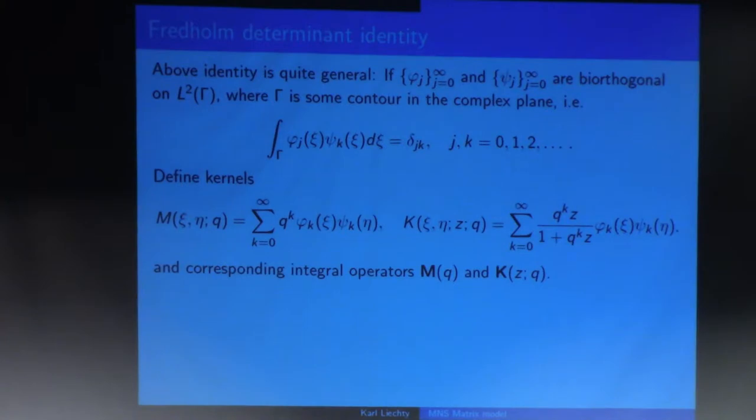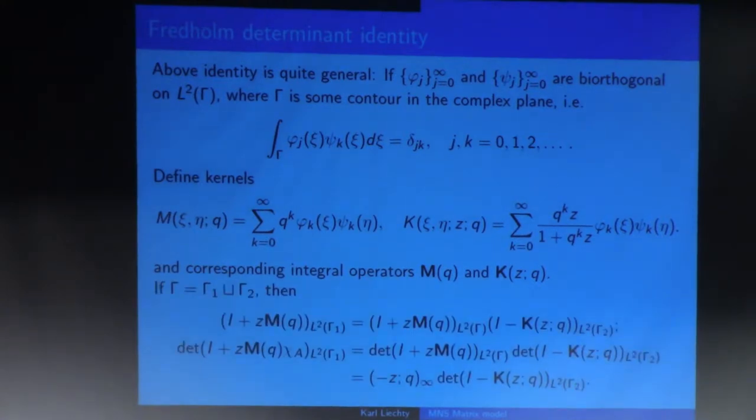And now, let me define kernels analogous to what we saw before. So M is just the sum of Phi times Psi weighted by Q, and K is the sum of Phi times Psi weighted by this rational expression involving Q and Z. And there's corresponding integral operators, bold M and bold K. Then we have exactly the same result as we had before. So if I take Gamma and I cut it into two pieces, Gamma 1 and Gamma 2, then the result is that the operator I plus Z times M on the first piece, Gamma 1, is the same as I plus Z on the big piece, Gamma, times I minus K on the remaining piece, Gamma 2.